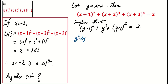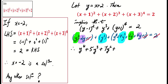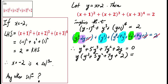Expanding this carefully and rewriting it as a fourth degree equation, we get y⁴ + 5y³ + 7y² + 2y = 0. With y as a common factor, we factorize it to get y(y³ + 5y² + 7y + 2) = 0.